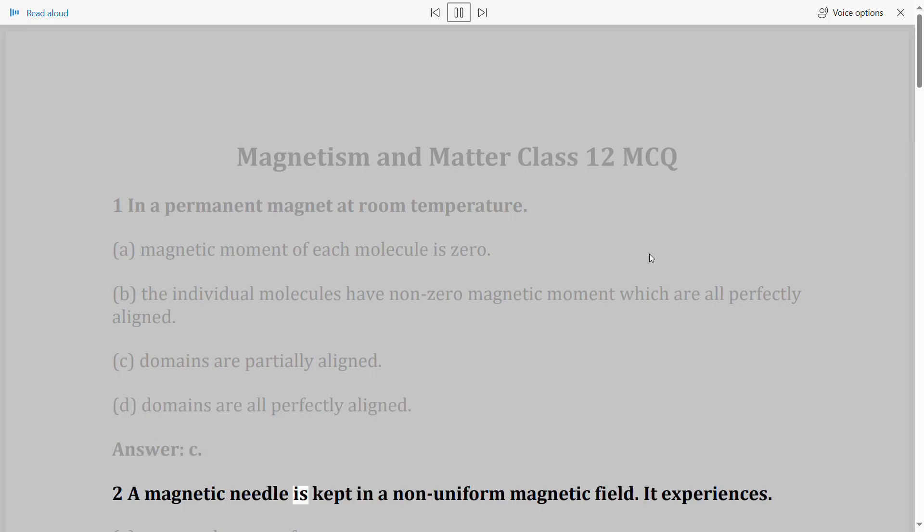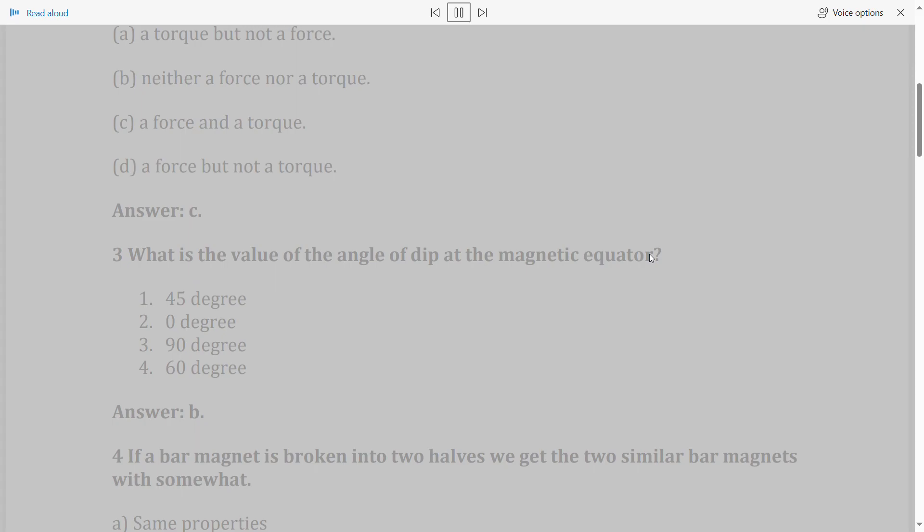Question 2: A magnetic needle is kept in a non-uniform magnetic field. It experiences A. A torque but not a force, B. Neither a force nor a torque, C. A force and a torque, D. A force but not a torque. Answer: C.